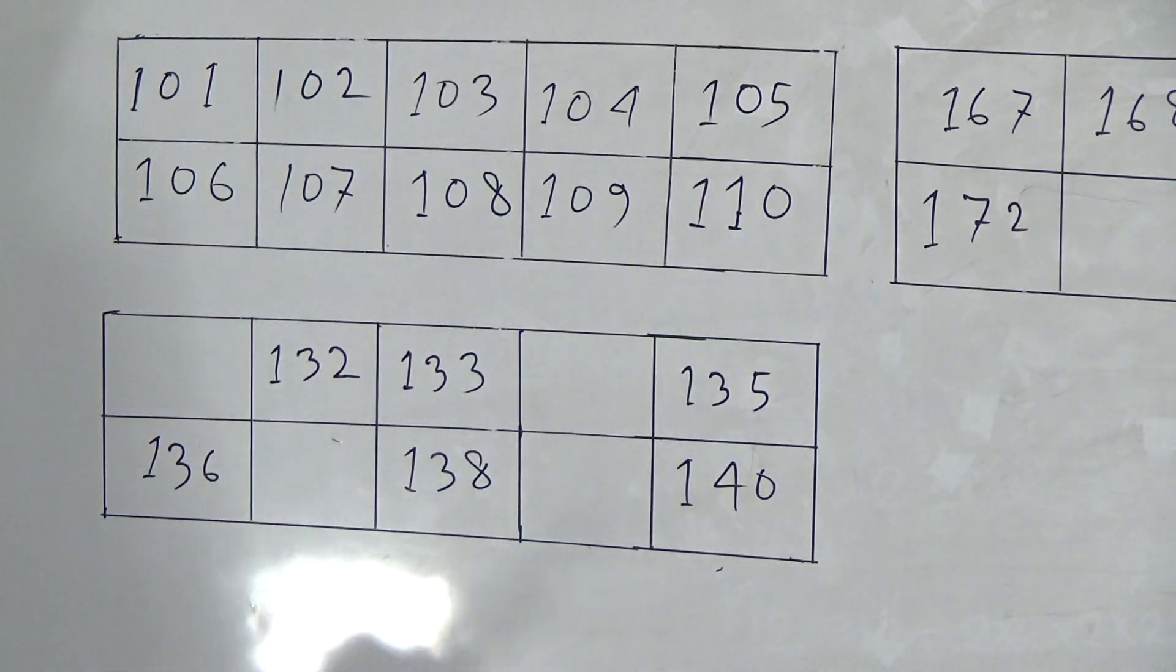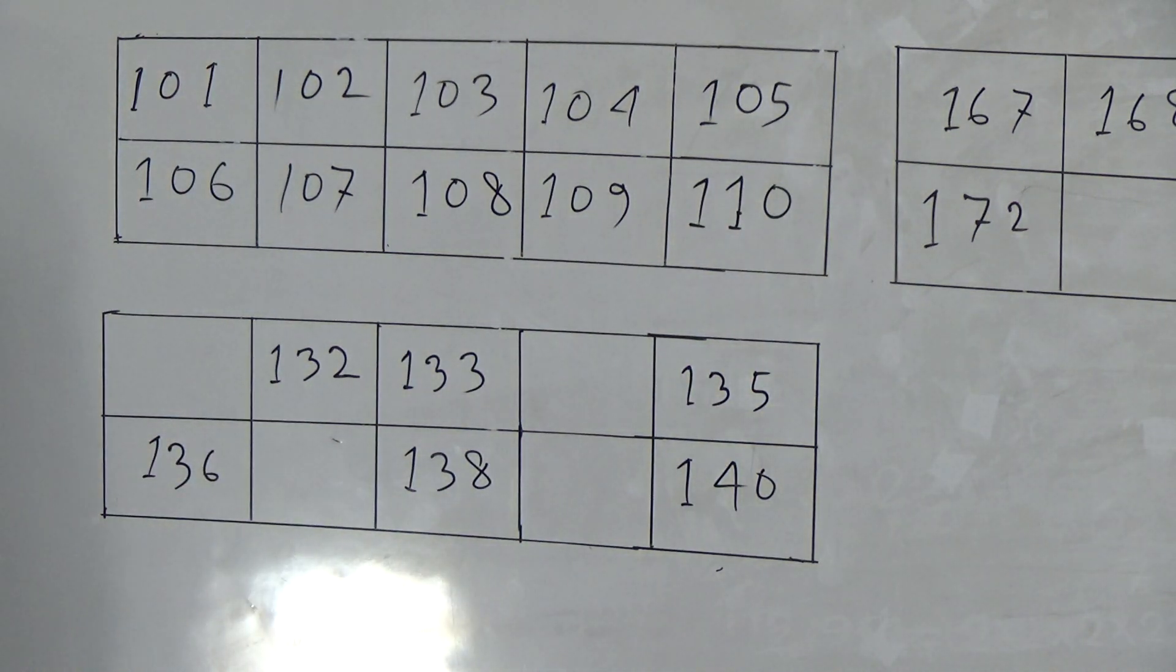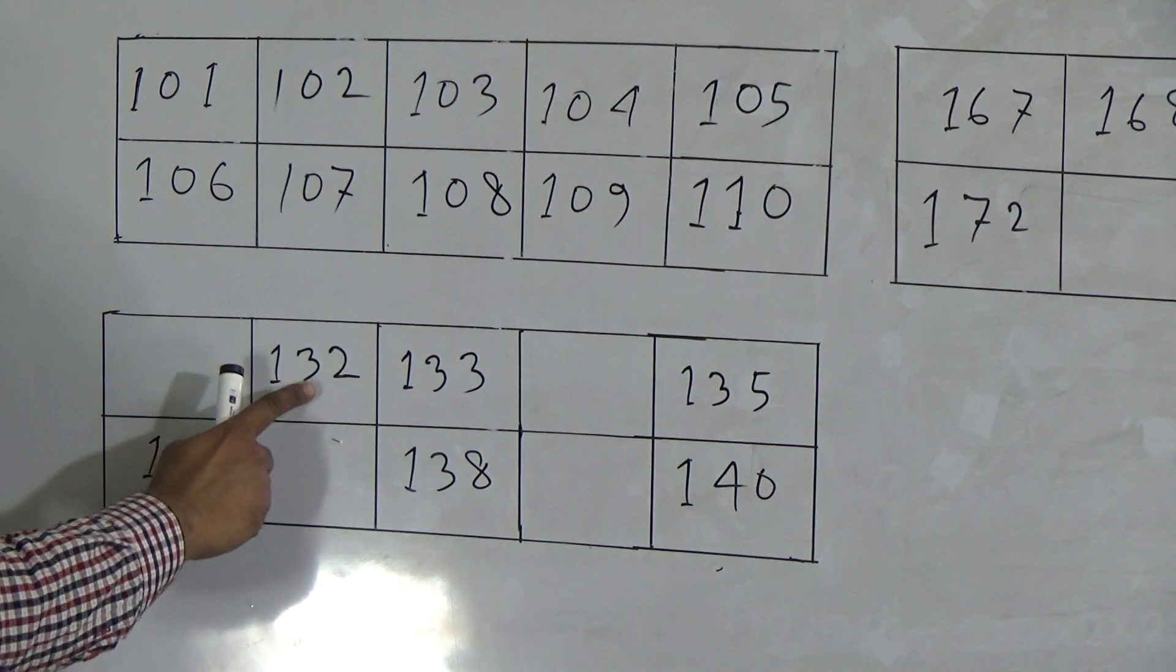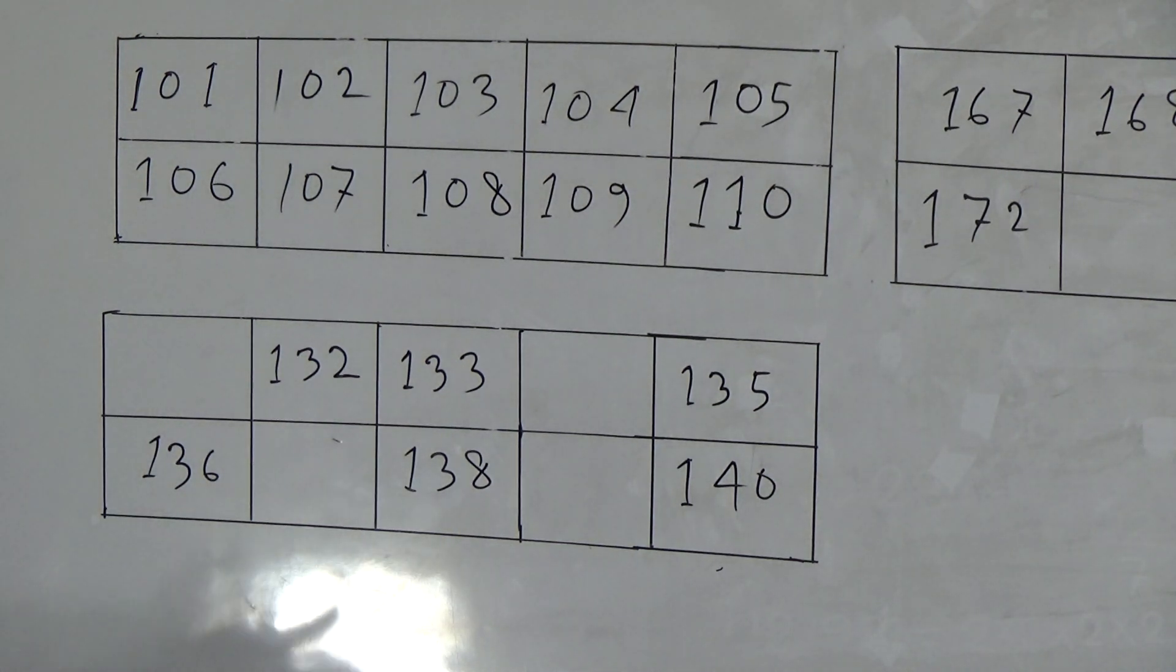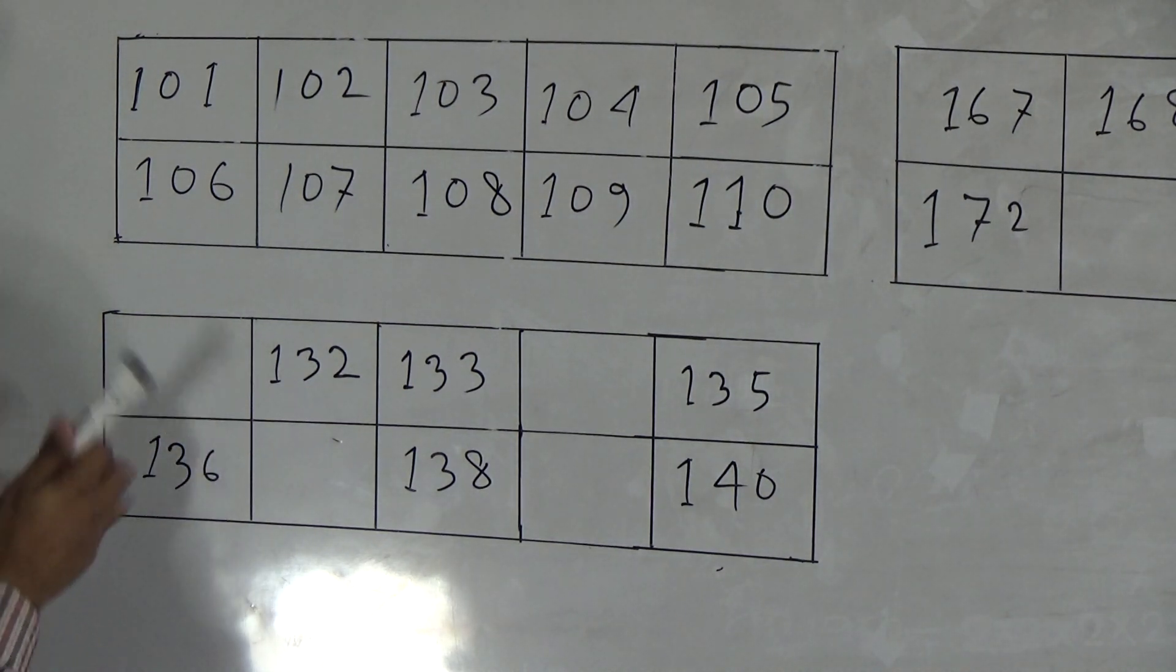Okay, dear students, now we will solve it. Here, starting number is blank and second number is 132. So, here we have to write previous number of 32. You know that previous number of 32 is 31. So, previous number of 132 will be 131.